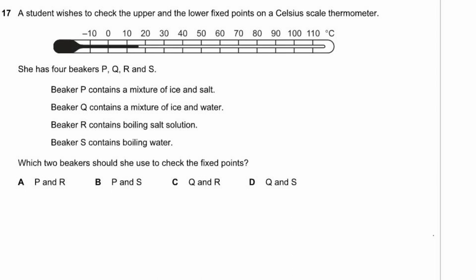Question 17. A student checks the upper and lower fixed points of a Celsius thermometer. The Celsius scale is defined at two points: pure water boiling and pure ice melting. Beaker P (ice and salt) — no, we don't want salt. Beaker Q (ice and water) — yes, melting ice. Beaker R (boiling salt solution) — no. Beaker S (boiling water) — yes. Use Q and S. Answer D.